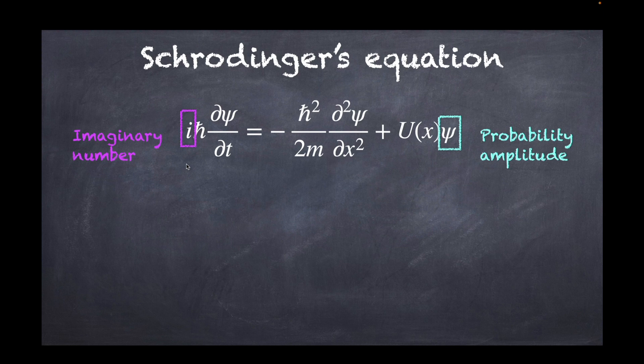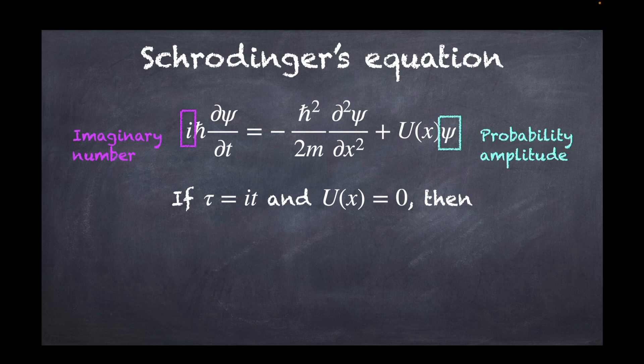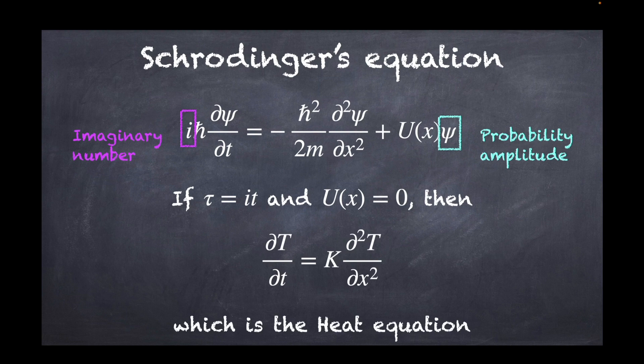Now the argument that was put forward by Science Asylum, which is also a very useful tool in theoretical physics, is that if we perform the following change of variable, so we set tau to be equal to it, some kind of imaginary time, and then we set the potential energy U of x to zero, meaning that there is no external force field, then we are going to obtain this equation: d psi over d tau is equal to h bar over 2m times the second order derivative in space of psi. Now if you look at this equation from far away, you're going to say, oh hold on, this looks like the heat equation, where T stands for the temperature and k for some heat diffusion coefficient.